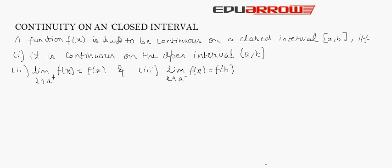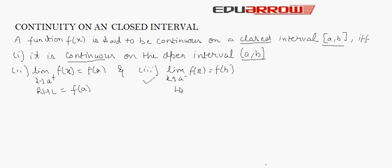Continuity on a closed interval: a function f(x) is said to be continuous on a closed interval [a, b] if it satisfies these properties. First, it should be continuous on the open interval (a, b). Second, the right-hand limit at x equals a should be equal to f(a). Third, the left-hand limit at x equals b should be equal to f(b).